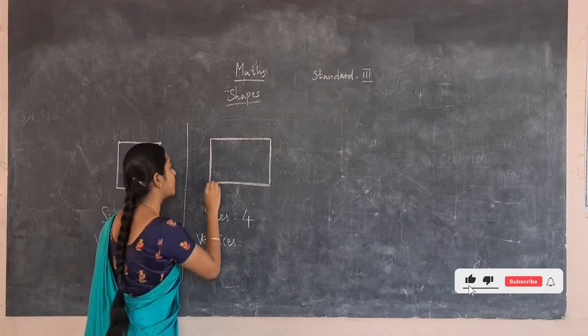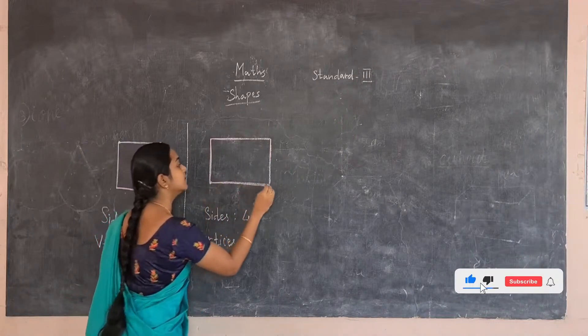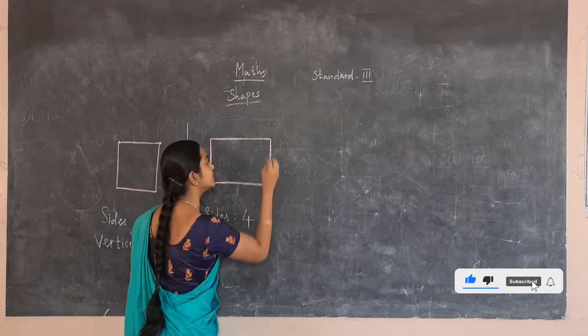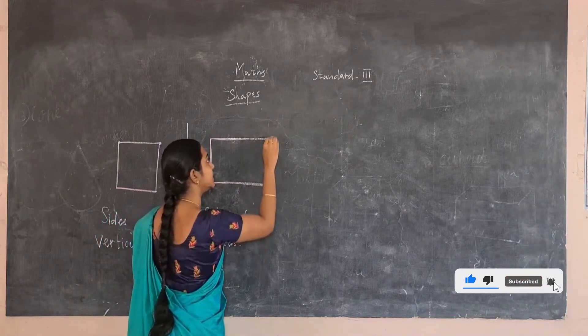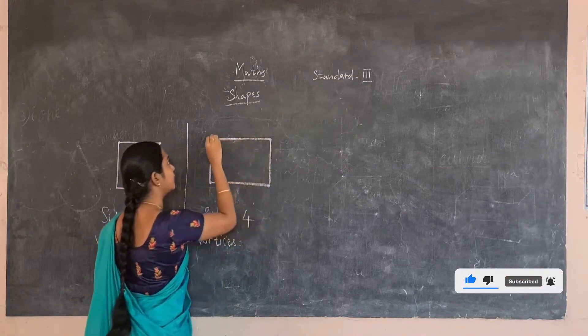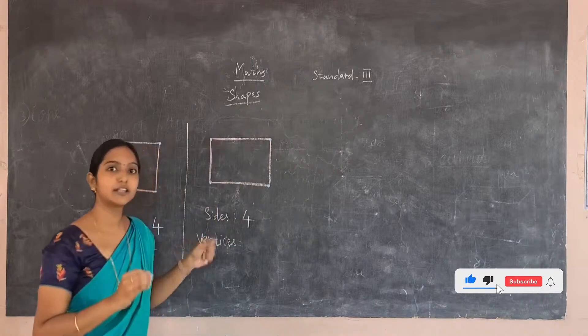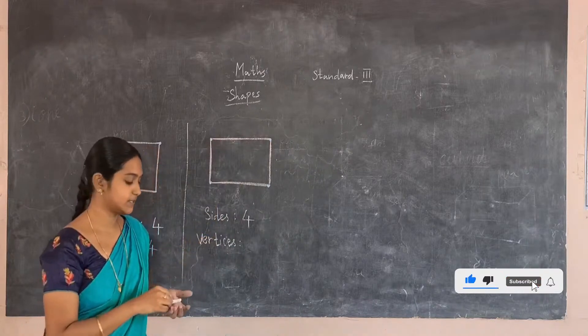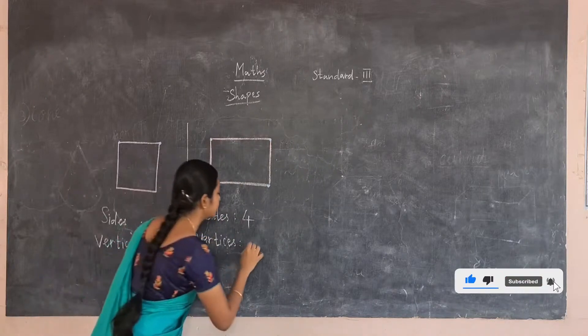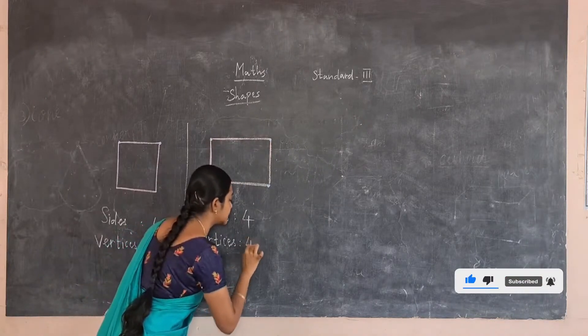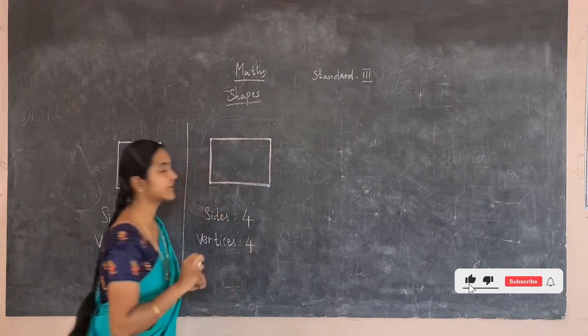Now let us find the vertices for the rectangle. How many corners are there? There are 1, 2, 3 and 4. We call corners as the vertices, so there are 4 vertices for the rectangle.